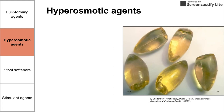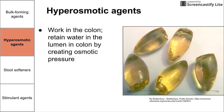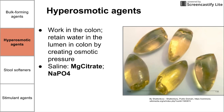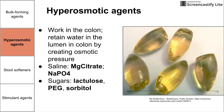Next we have the hyperosmotic agents. These work in the colon, retaining water by creating an osmotic pressure. They are osmoles that dissolve in fluid and create osmotic pressure, but cannot be transported into the body — they remain in the GI tract lumen without crossing the epithelial cells. They draw water out into the lumen of the GI tract. There are subcategories: saline agents like magnesium citrate and sodium phosphate, and sugars like lactulose, PEG, and sorbitol.